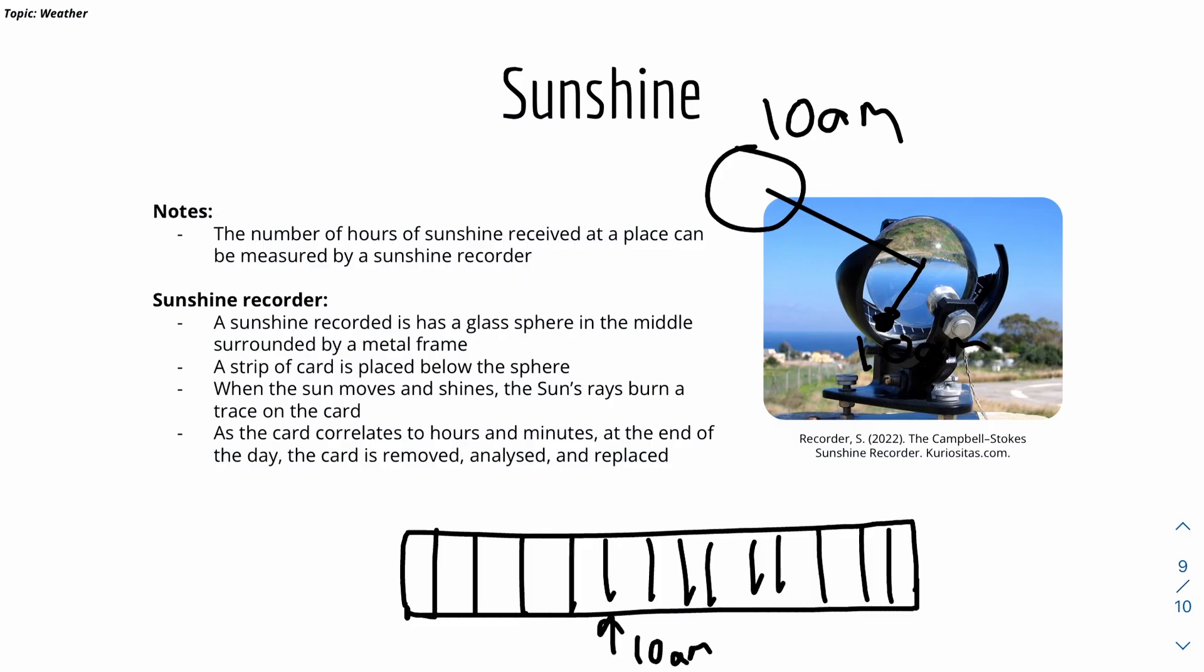Let's say this corresponds to 10 a.m. So as the 10 a.m. sun shines, it will basically burn the part where it corresponds to 10 a.m., so this part here will be burnt. When someone analyzes this card, they can see that 10 a.m. is burnt. That means they know that during 10 a.m., there's a lot of sunlight.